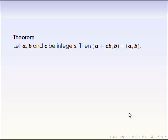Let's prove the next theorem. It says: for any given integers a, b, and c, the greatest common divisor of a and b must be the same as the greatest common divisor of b and a plus c times b. So the meaning is if you have any greatest common divisor of a and b, then some kind of linear combination between a and b, like this, also has exactly the same greatest common divisor.